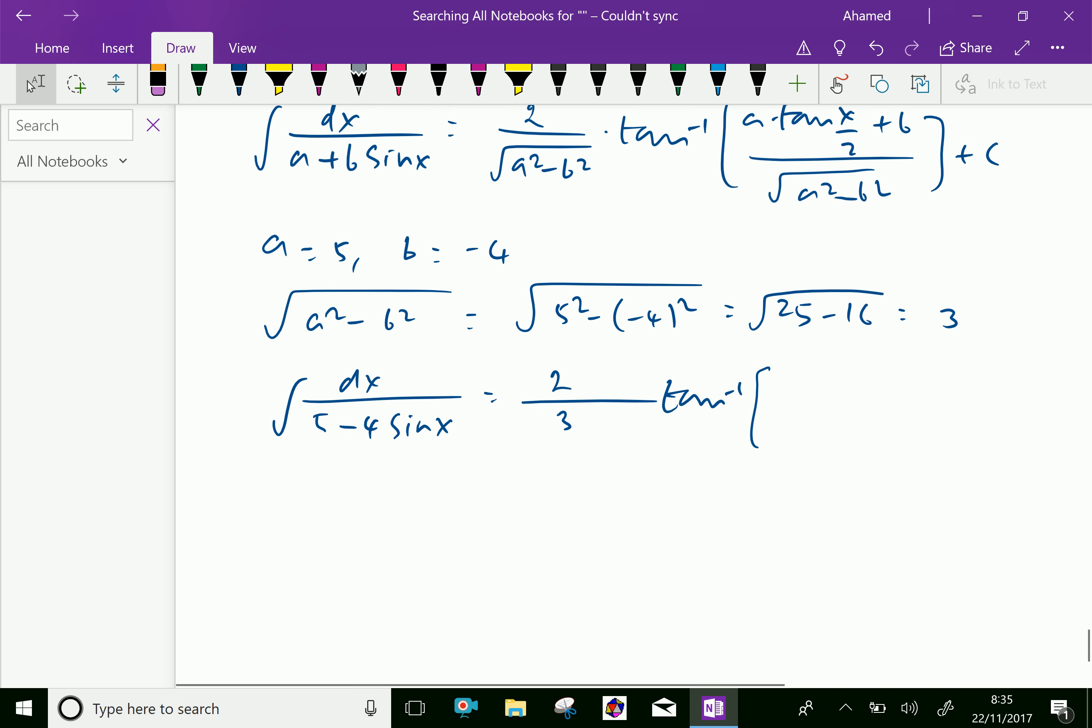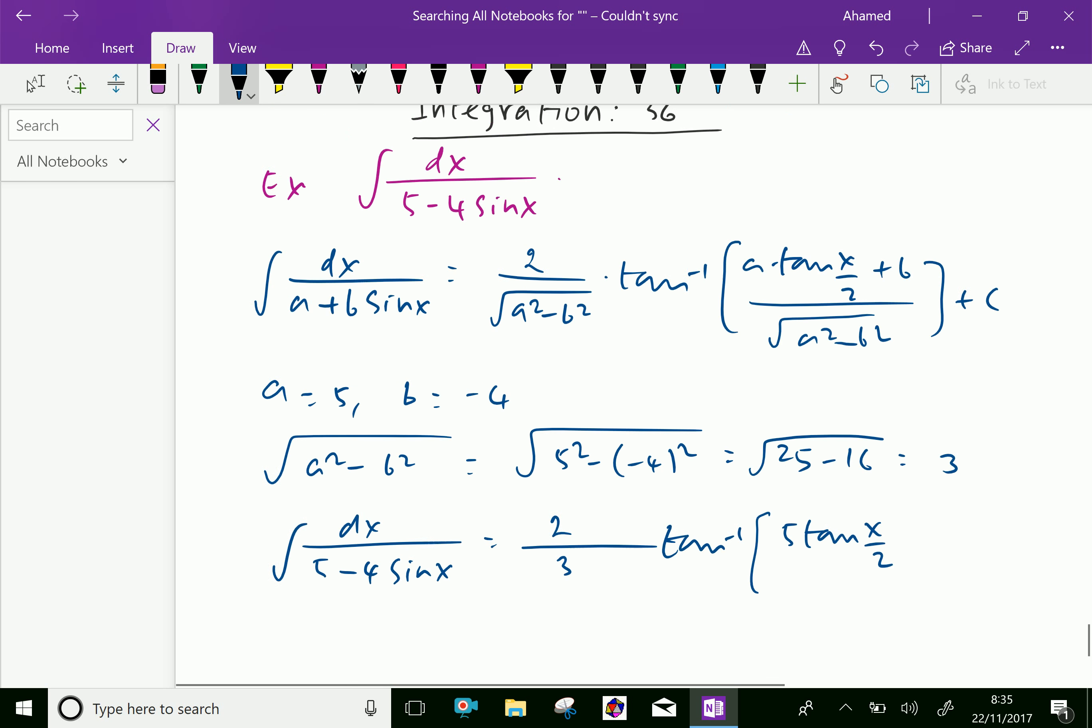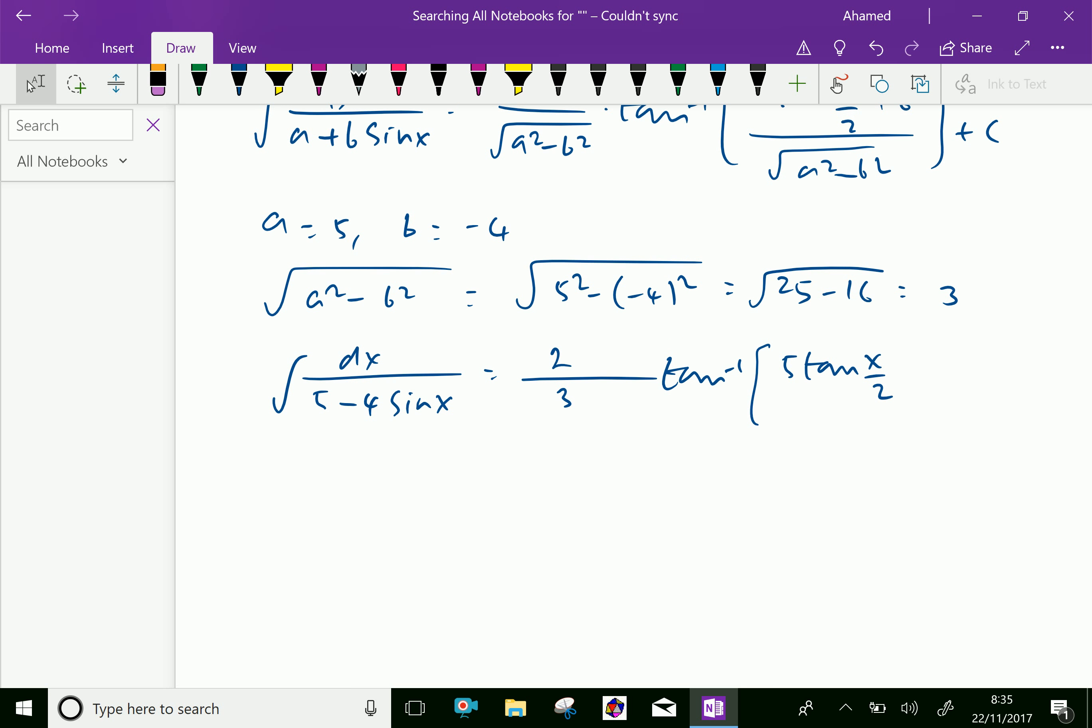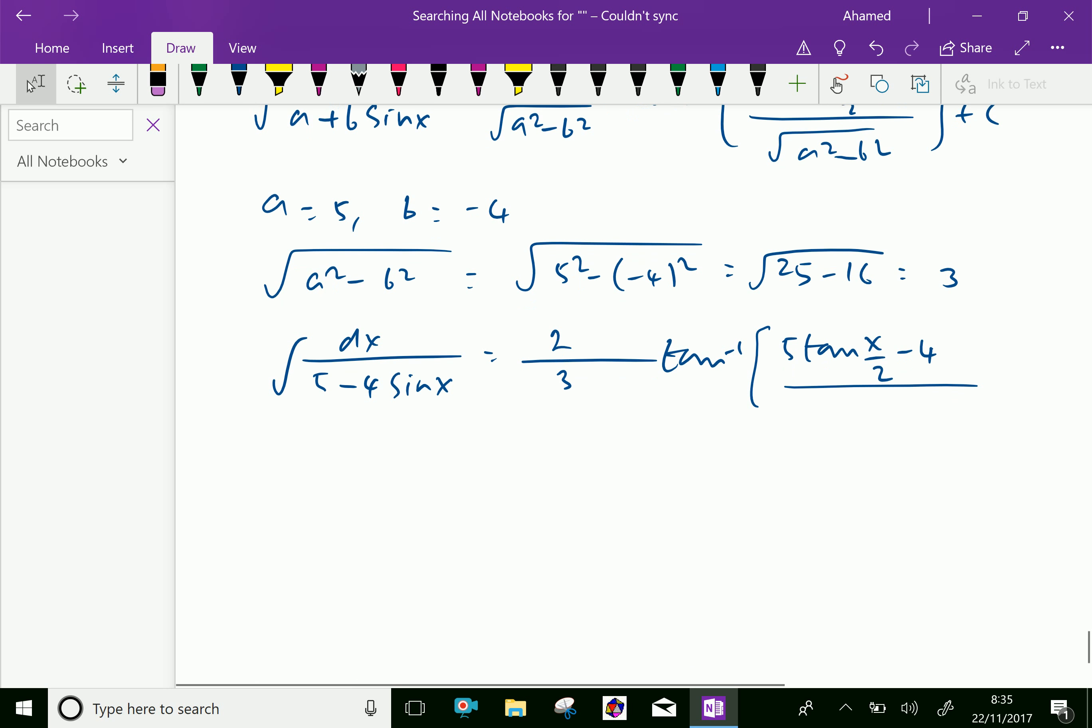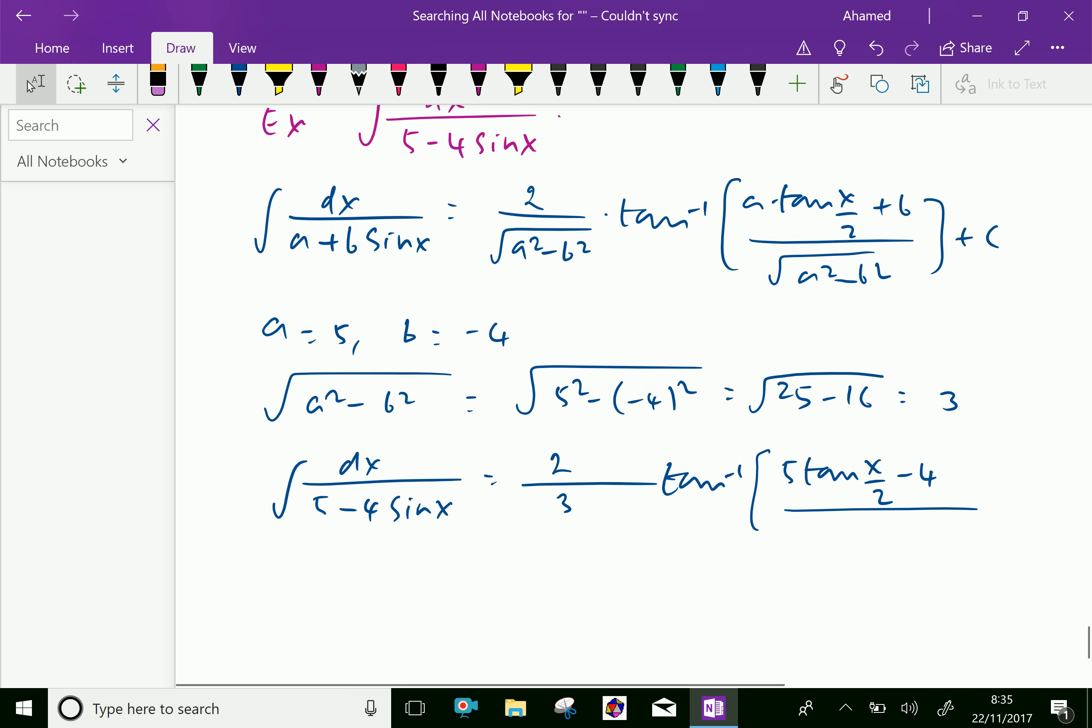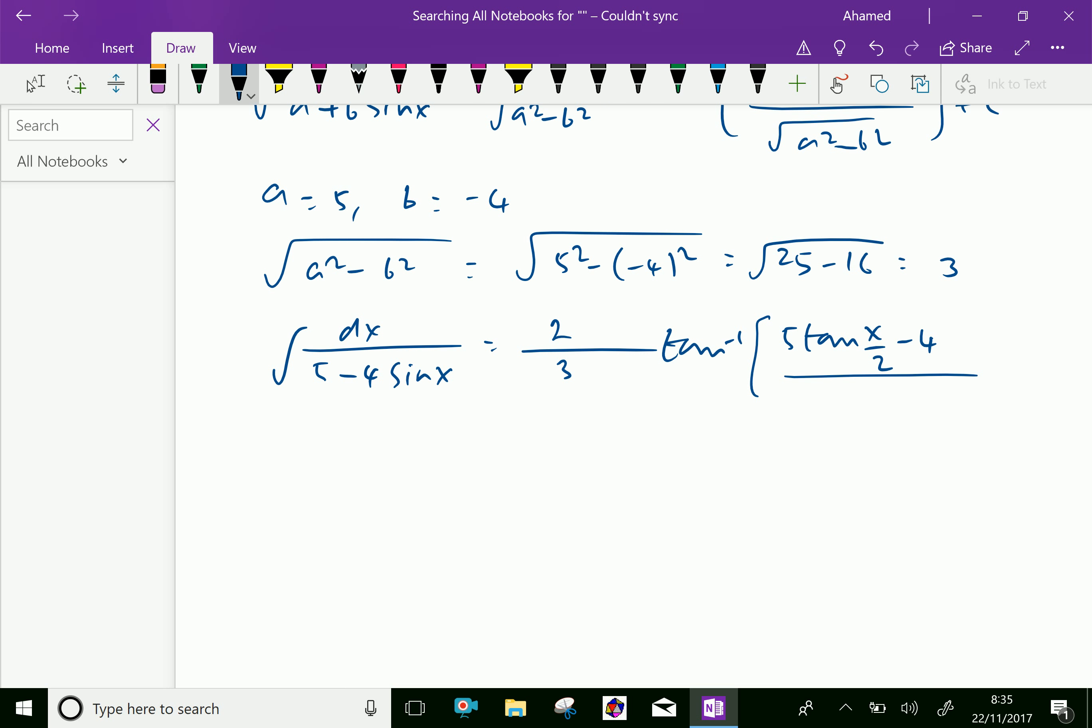of a, which is 5, tan x by 2 plus b, b is minus 4, over square root of a squared minus b squared, which is 3, plus C is the final answer.